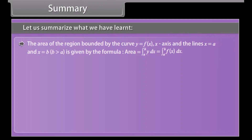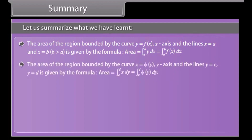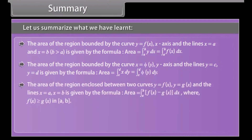Summary. The area of the region bound by the curve y = f(x), the x-axis, and lines x = a and x = b (where b > a) is given by: Area = ∫ from a to b of y dx = ∫ from a to b of f(x) dx. The area of the region bound by the curve x = φ(y), the y-axis, and lines y = c and y = d is: Area = ∫ from c to d of x dy = ∫ from c to d of φ(y) dy. The area of the region enclosed between two curves y = f(x) and y = g(x) and lines x = a and x = b can be formulated using the respective integral formula.